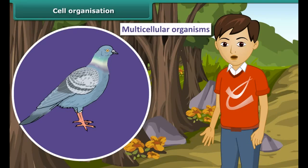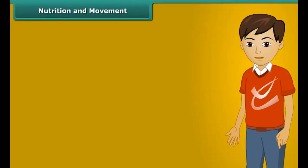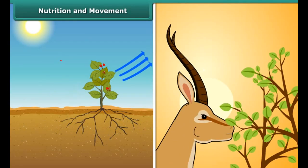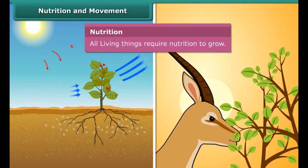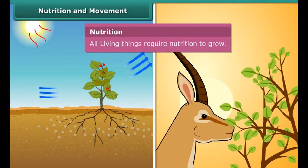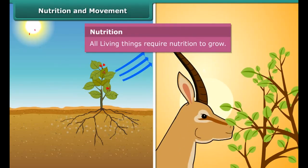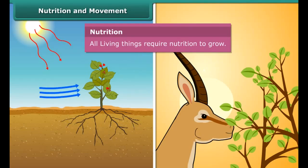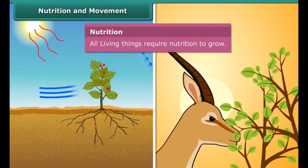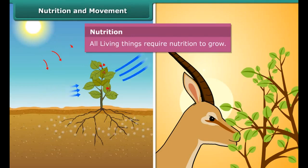Another important characteristic of living things is nutrition. All plants and animals require food to grow and survive. Plants prepare their own food by the process of photosynthesis in the presence of sunlight, whereas animals depend on plants for their food.